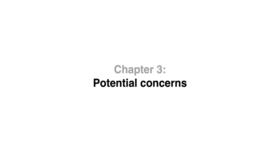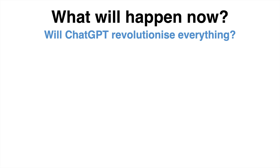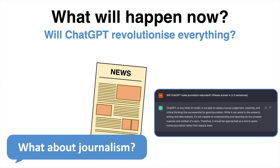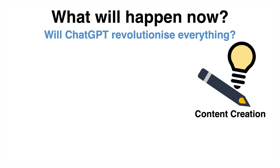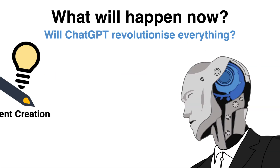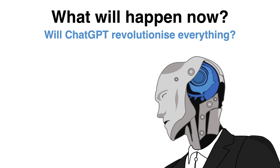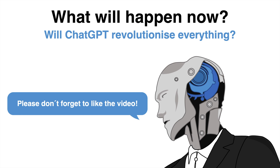The use of AI, including ChatGPT, raises important ethical concerns, particularly when it comes to its use in fields such as journalism. As AI technology advances, it is becoming increasingly easy to generate realistic fake news and misinformation. This can have serious implications for public trust in media. Additionally, there are concerns about the use of AI in content creation, which could lead to the displacement of human workers. It is important to consider the ethical implications and to ensure that AI is used responsibly.